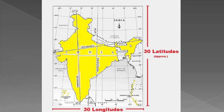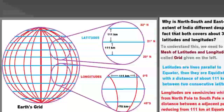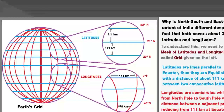From north to south, its distance is 3,214 kilometers, and the east-west extent is 2,933 kilometers. Why are the north-south and east-west extents of India different, despite the fact that both cover about 30 degrees of latitudes and longitudes?